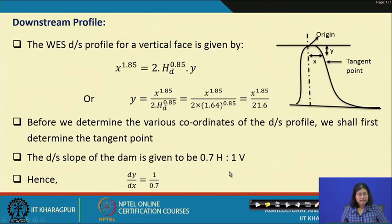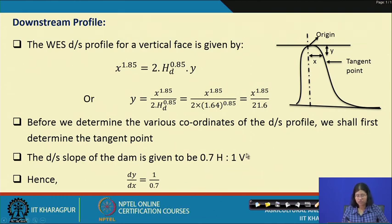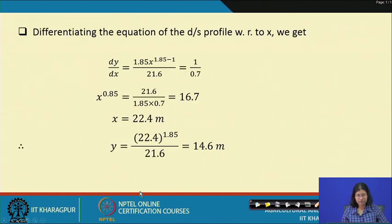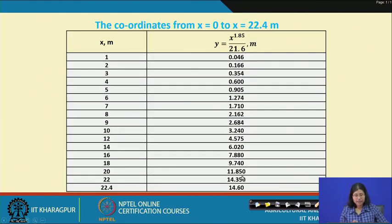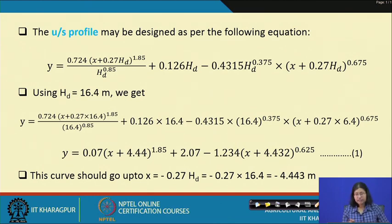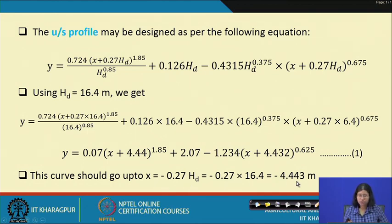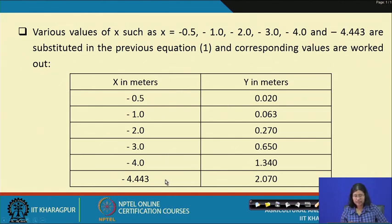Coming to the downstream profile, given by the empirical formula: first we determine the tangent point. The downstream slope is 0.7 horizontal to 1 vertical, so dy/dx = 1/0.7. Differentiating the profile equation and solving, we get x = 22.4 m and y = 14.6 m as the tangent point coordinates. Using H_d = 16.4 m and plugging various x values into the upstream profile equation, we obtain the profile shape up to x = −0.27 H_d.